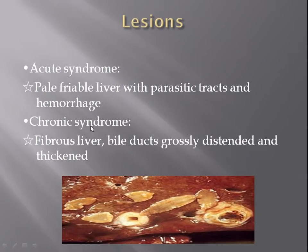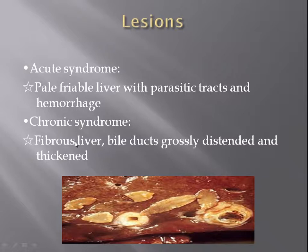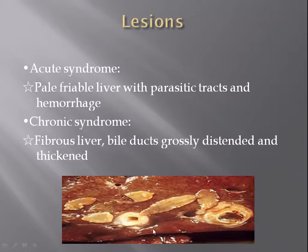Now, what are the lesions on post-mortem? In case of acute syndrome, we see pale fibrous liver with parasitic tracts and hemorrhages. In case of chronic syndrome, on post-mortem when we dissect the liver, we see fibrous liver, bile ducts grossly distended and thickened. Here is a picture of the liver with lesions due to liver fluke.